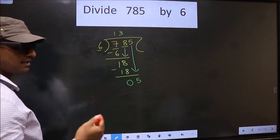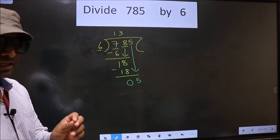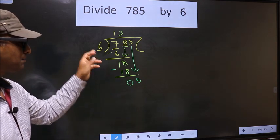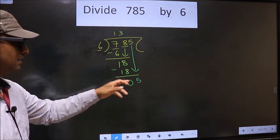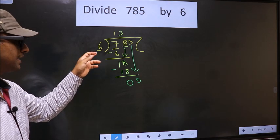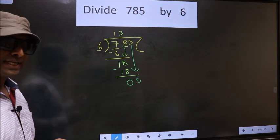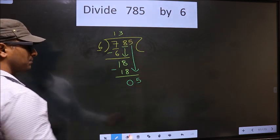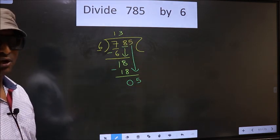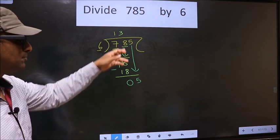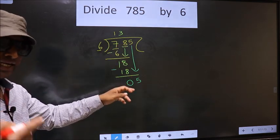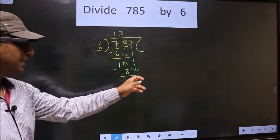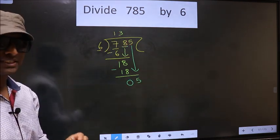This is where the mistake happens. And the mistake is this. Here we have 5. Here 6. 5 is smaller than 6. So what many do is, they put a dot and take 0 here, which is wrong. Just now you brought the number down. And in the same step, you want to put a dot and take 0 here, which is wrong.